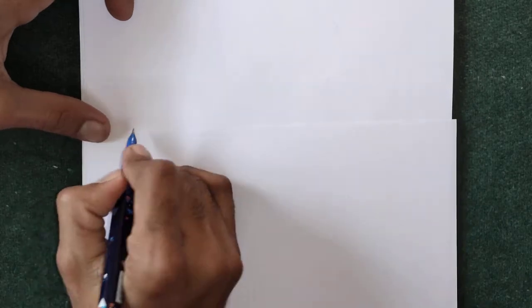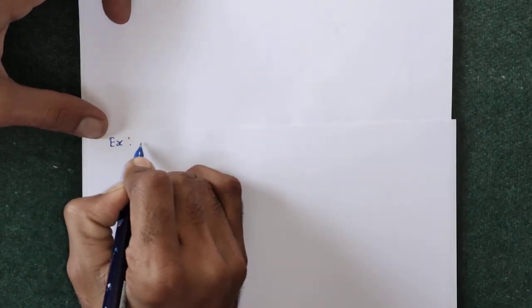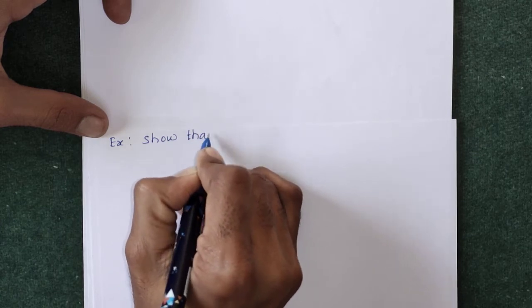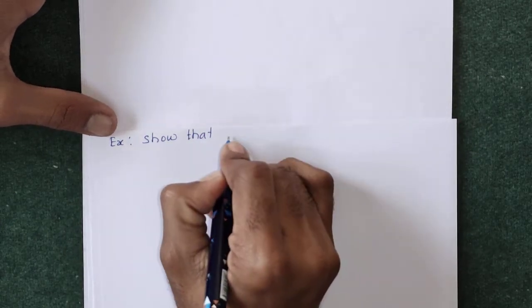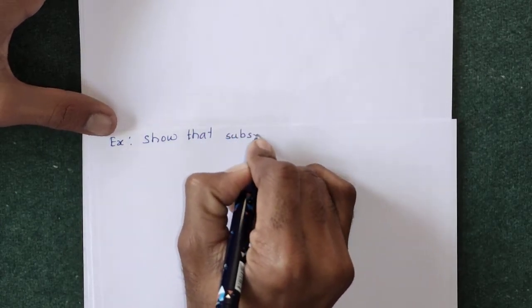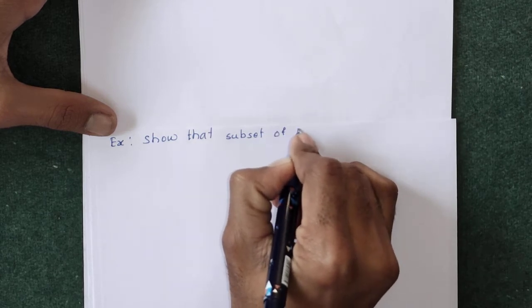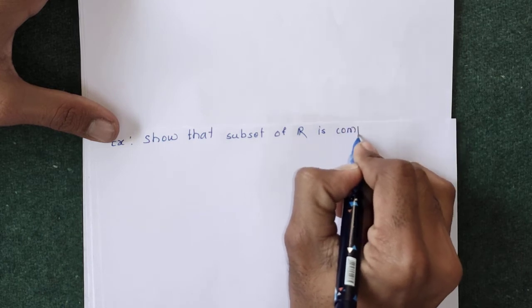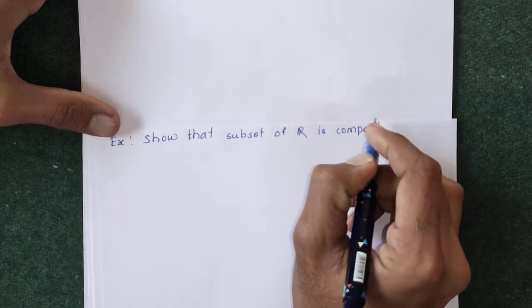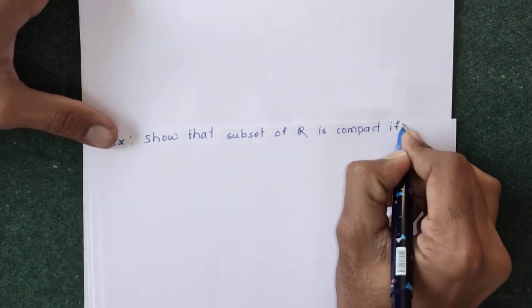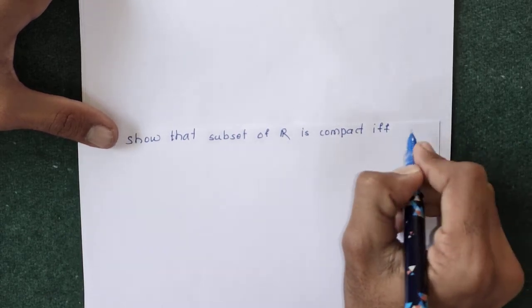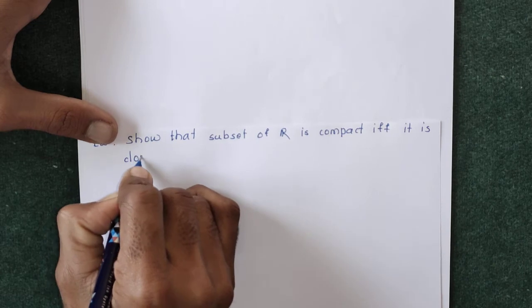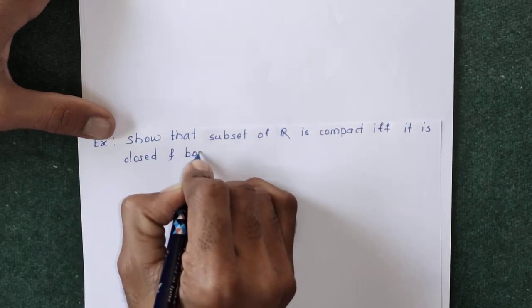The first example is: show that a subset of R, the set of real numbers, is compact if and only if it is closed and bounded.